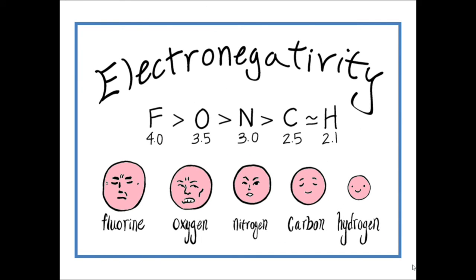Observe the diagram. Chlorine, oxygen, nitrogen, carbon, hydrogen. Fluorine 4.0 electronegativity value. Oxygen 3.5, nitrogen 3.0, carbon 2.5, hydrogen 2.1. Highest is chlorine.